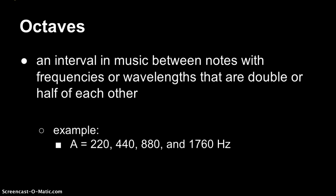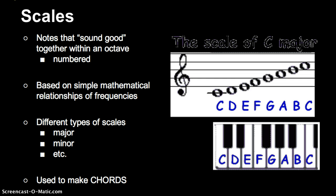And once we know what an octave is, then we can talk about musical scales. So musical scales are just notes that sound good together within an octave. So between that 440 and that 880, there are notes we could play that would go along with an A major scale. Now on the right side, you see there's a C major scale.